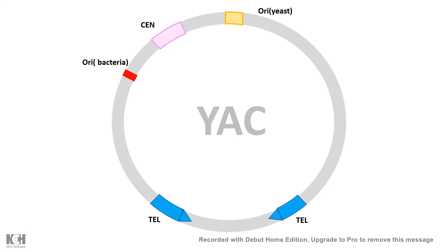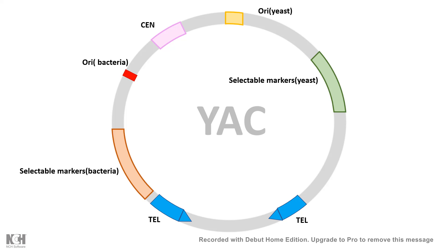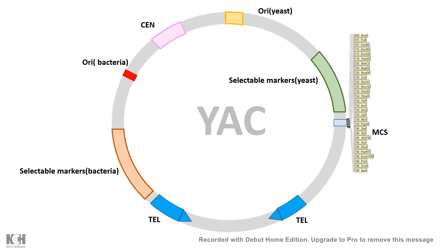YAC has a telomeric sequence because telomeres are important for the stability of any chromosome inside a eukaryote. It also has selectable markers for both species — for bacteria and for yeast. At the end, it has a multiple cloning site, which is a common feature of any cloning vector. Strategically, two BamH1 sites are placed flanking the telomeres, and we'll learn about why they are specially designed to be placed there.